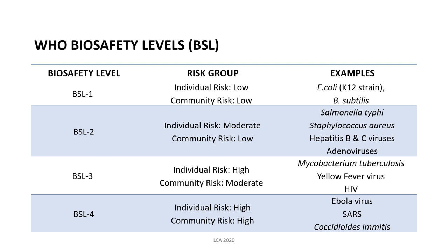For BSL 3, this includes working on pathogenic microbes that can cause serious disease through inhalation. For example, we have Mycobacterium tuberculosis — the causative agent of TB — yellow fever virus, HIV, and West Nile virus. There is a high risk for an individual to contract diseases caused by microorganisms classified under BSL 3, and for the community risk there is a moderate possibility of acquiring the causative agents.